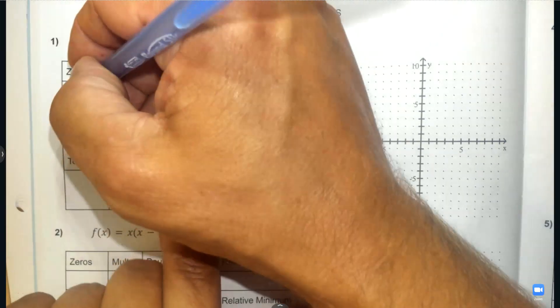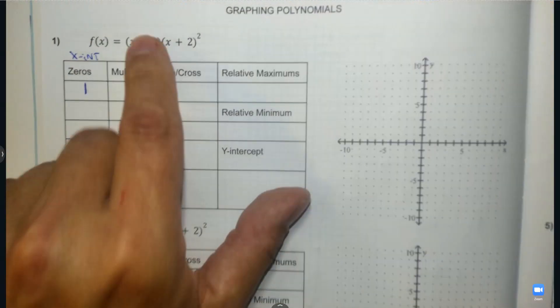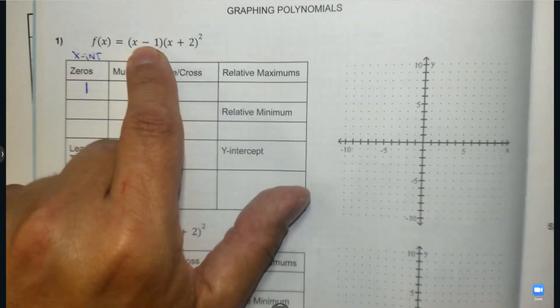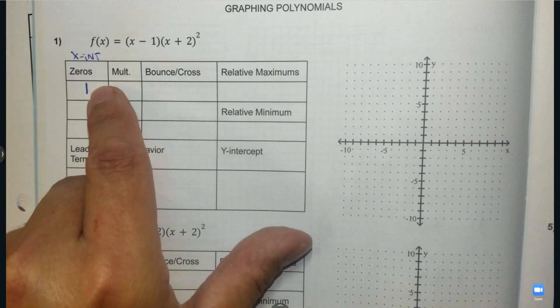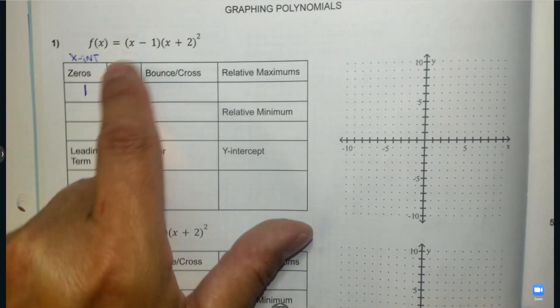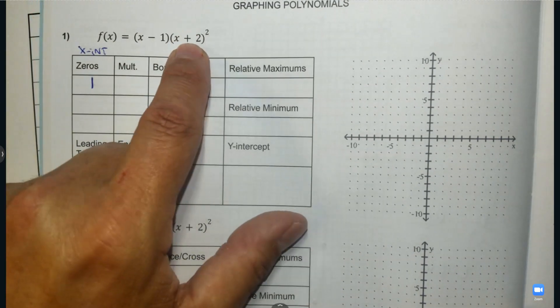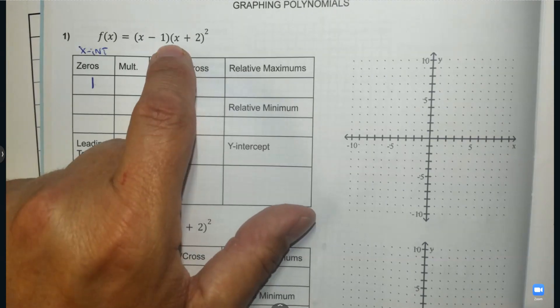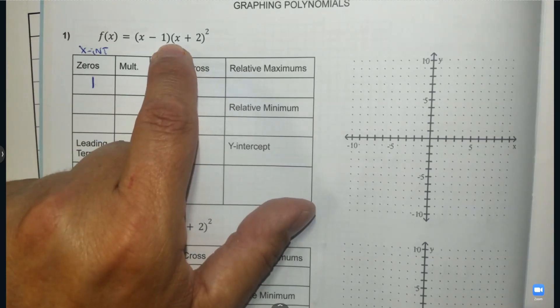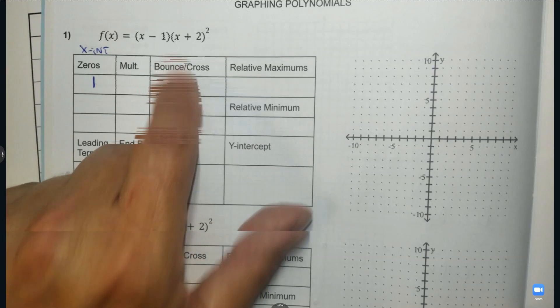The answer is positive one. You're going to know that factors — that's what's inside the parentheses with x — and zeros, they're opposite numbers. Just like here, what makes a zero? The opposite of positive two is negative two; the opposite number makes it zero.